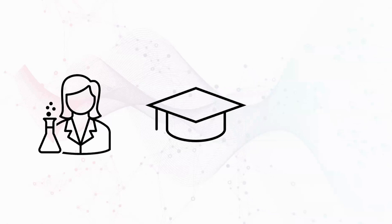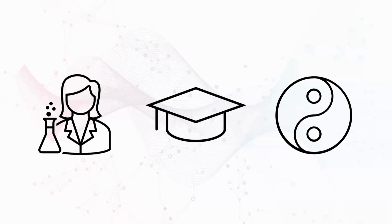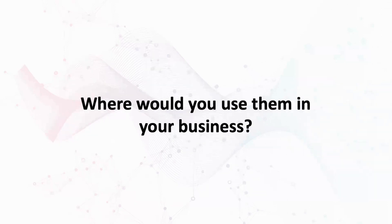On top of that, this individual also has a PhD in interdisciplinary science — different kinds of science expertise — as well as a PhD in philosophy. An amazing talent: great business skills from their MBA, very well versed in different sciences, philosophy, and languages. Where would you use them in your business? Where would you find the most value?